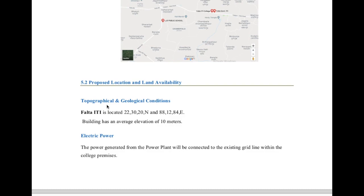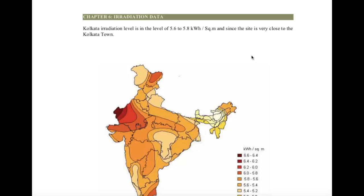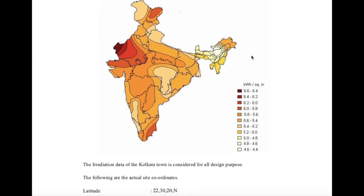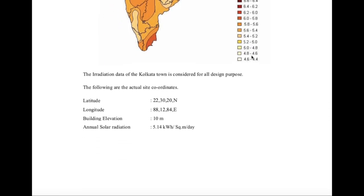We put the site map here and ultimately from the site survey we have confirmed this site has all the infrastructure and other facilities for the installation. We have mentioned the proposed locality and land availability, along with topographic and geographical conditions — latitude, longitude, and altitude. For electric power, we connect it to the LT panel or existing grid line of the college premise, so no compliance is required from the electricity board or any external government authority.